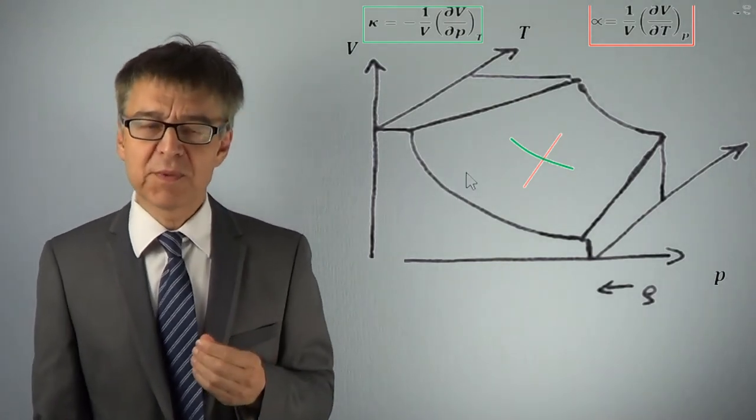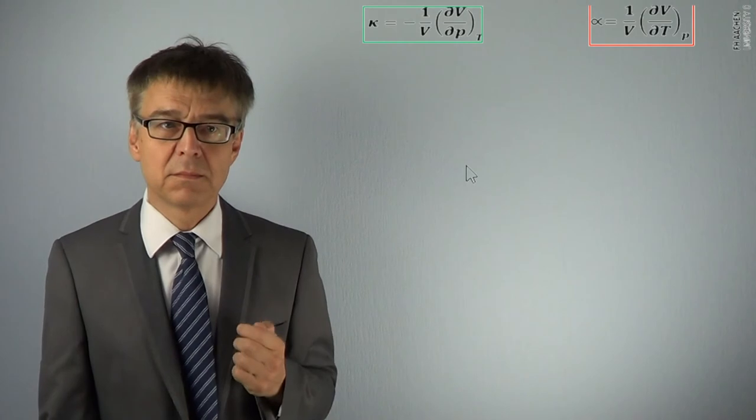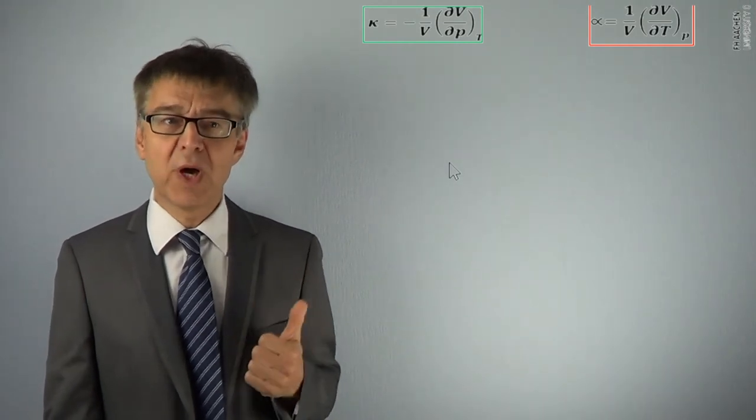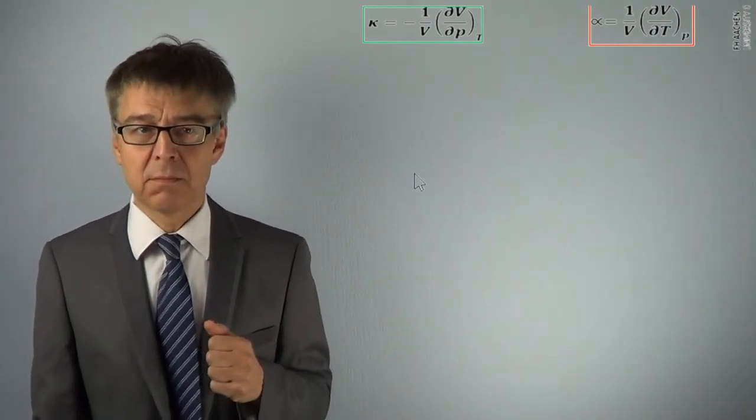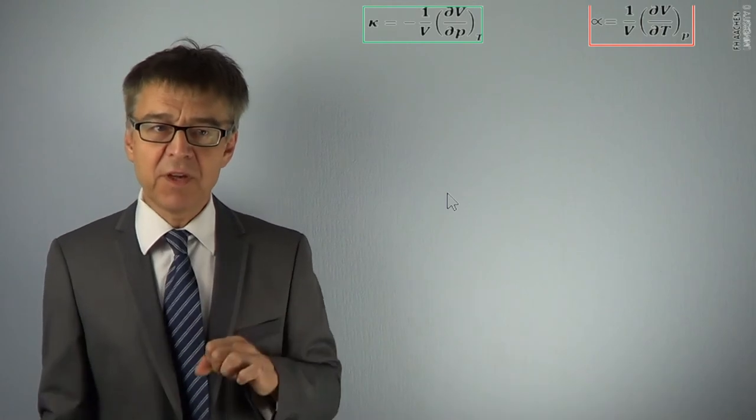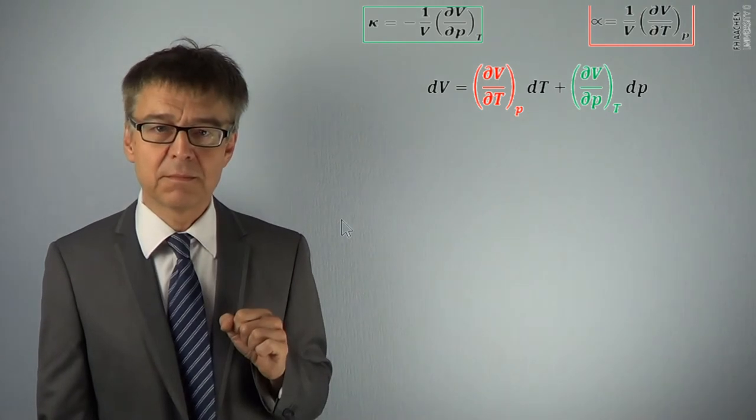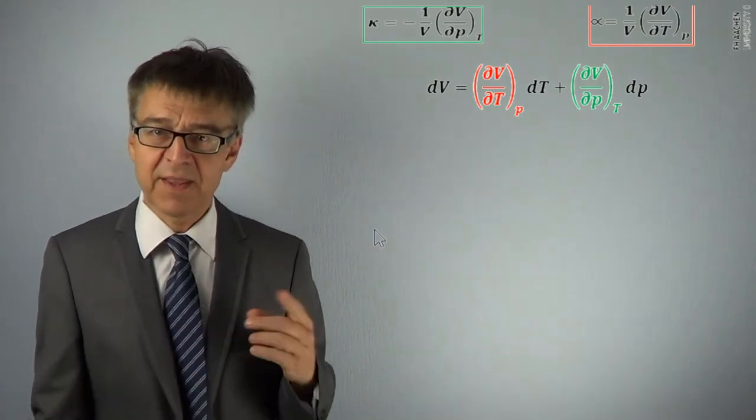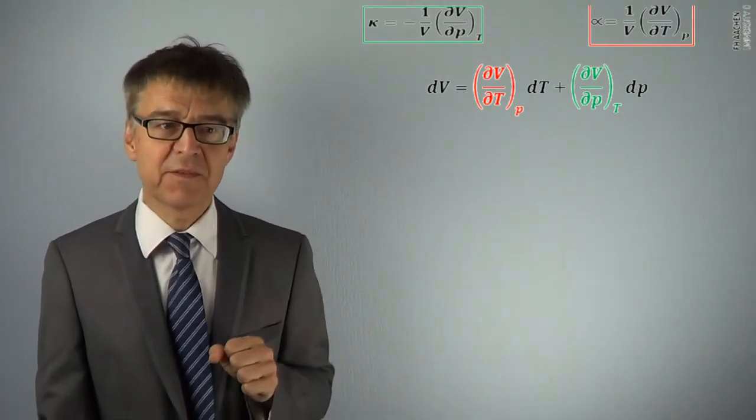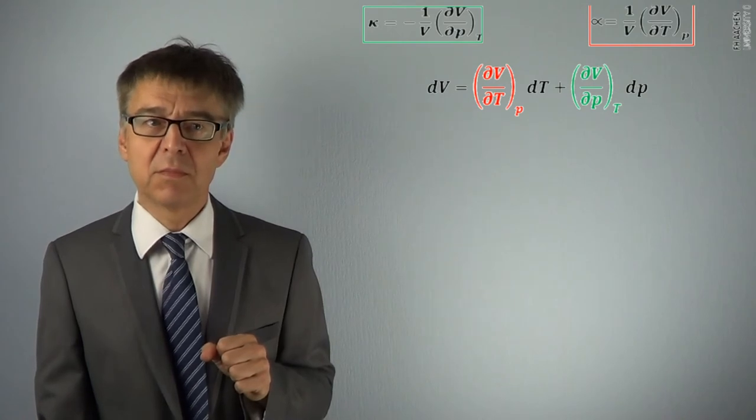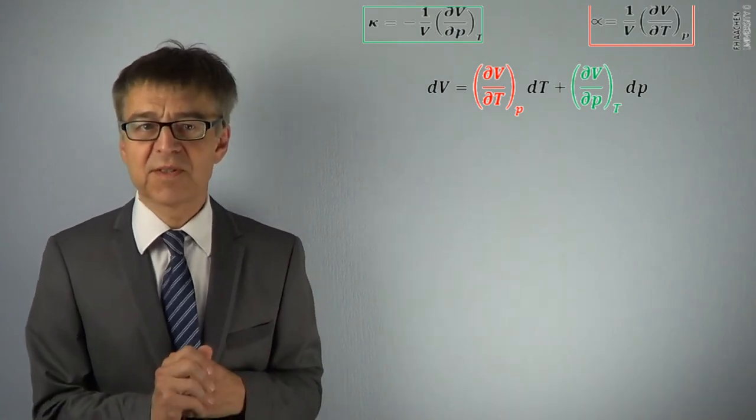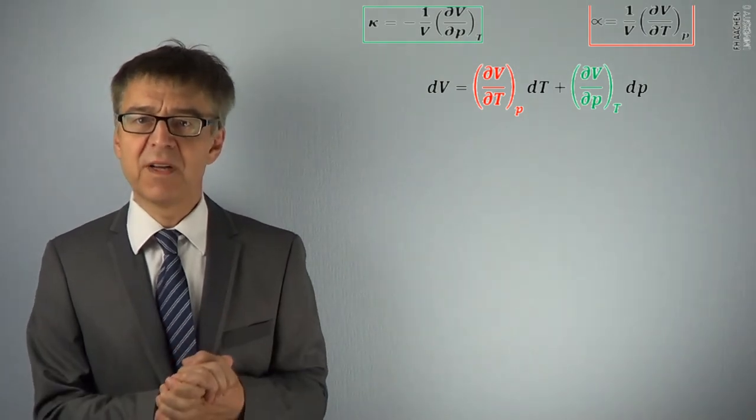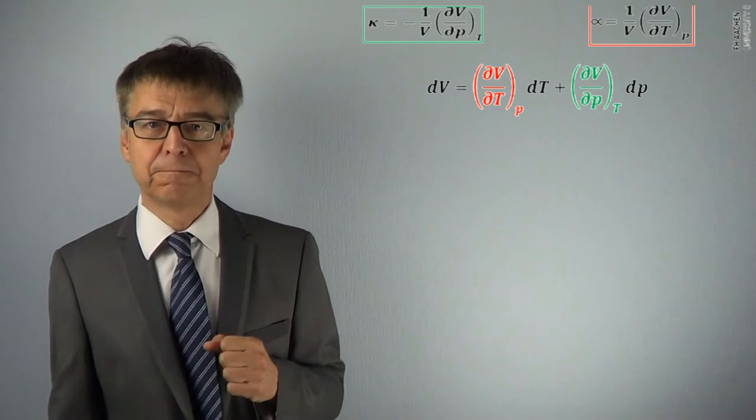Because molar volume is a state variable, it clearly depends on two and only two state variables. Mathematically speaking, molar volume has a total differential. dV clearly depends on dT and dP. The factors that stand in front of dT and dP are the partial derivatives of the molar volume. And these correspond to the slopes just discussed. The expansion coefficient alpha and the compressibility kappa.